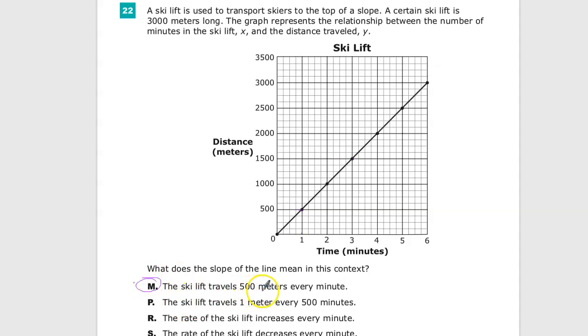The ski lift travels one meter for every 500 minutes. That makes absolutely no sense. Minutes are down here. The thing doesn't even go up to 500, but this definitely goes up to one. So that's out.